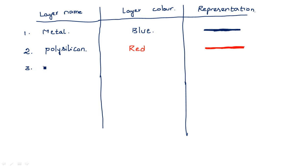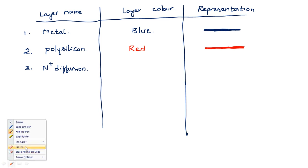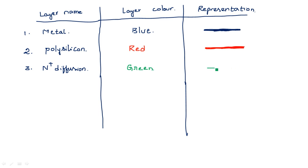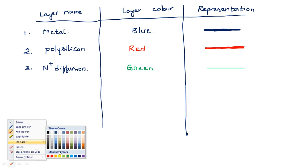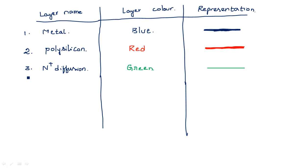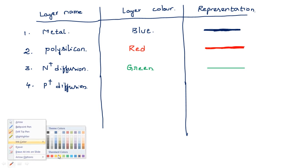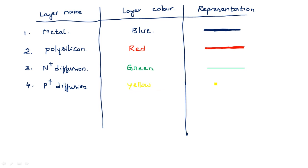The third layer is N-plus diffusion, which is represented by green color — a green horizontal or vertical line. The fourth layer is P-plus diffusion. N-plus diffusion is for the NMOS transistor and P-plus diffusion is for the PMOS transistor. The color for P-plus diffusion is yellow, represented as a horizontal or vertical yellow line.